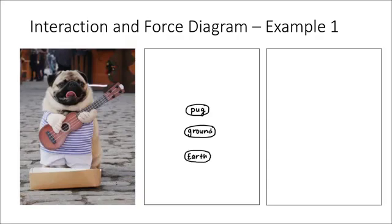I always want to include the earth in my diagram. Now that I have all of the objects in my system, I'm going to start thinking about how these objects are interacting with each other. I know that there exists a gravitational force of attraction between the pug and the earth. I've also shown a gravitational force between the earth and the ground — even though they're essentially the same object in this case, it's just good practice. Now I also know that the ground is pushing back up against gravity, helping the pug stay upright, so I'll draw in that force between the ground and the pug as well.